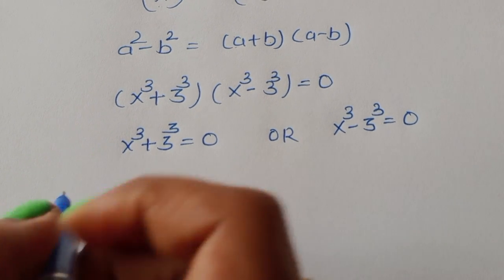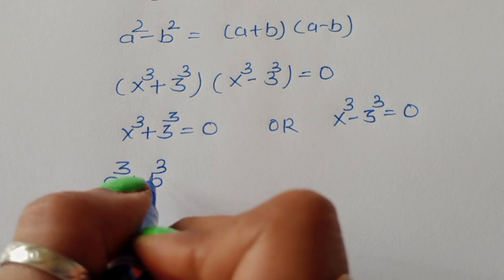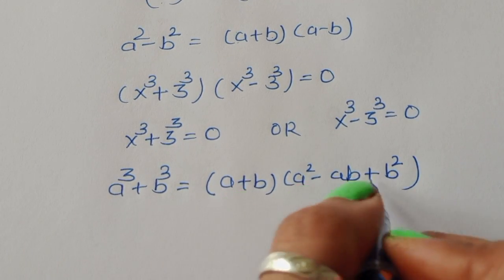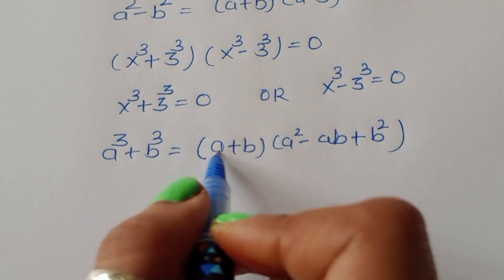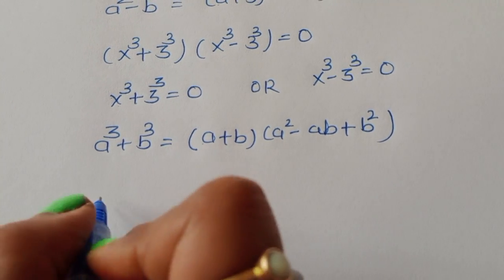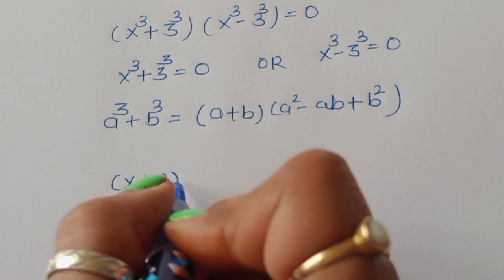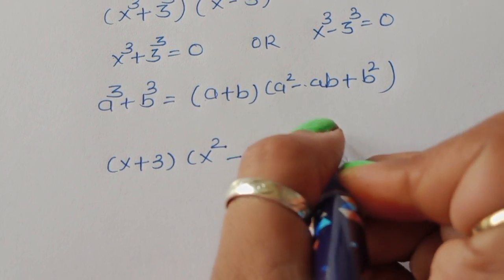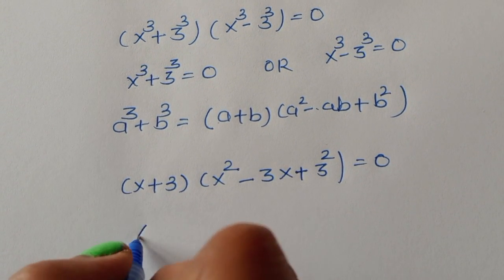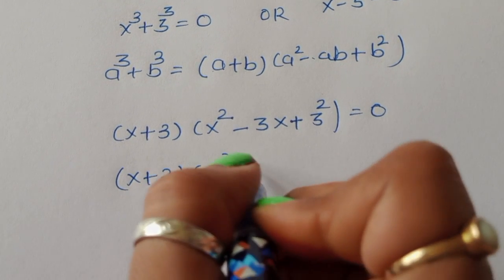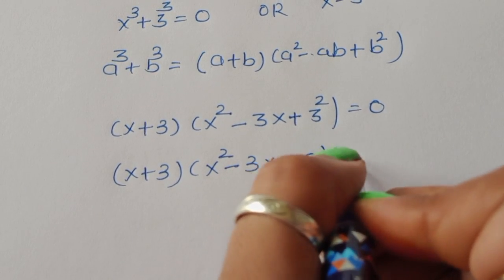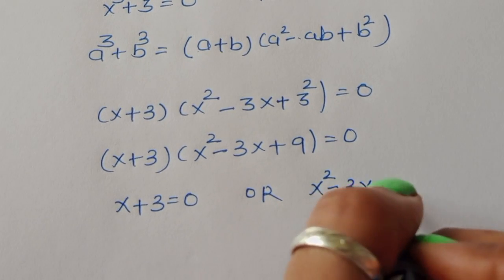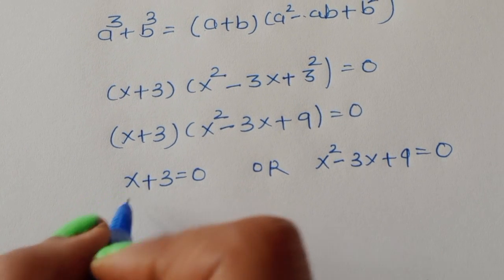The first equation is x³ + 3³ = 0. This is the form of a³ + b³. The formula is a³ + b³ = (a + b)(a² - ab + b²). Applying this, we get (x + 3)(x² - 3x + 9) = 0, giving two equations: x + 3 = 0 and x² - 3x + 9 = 0.